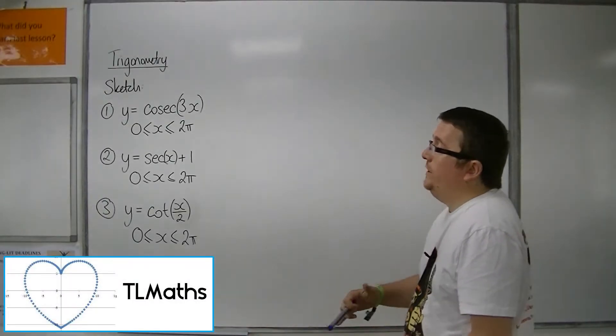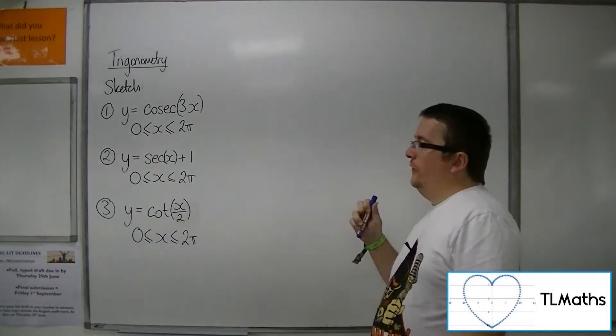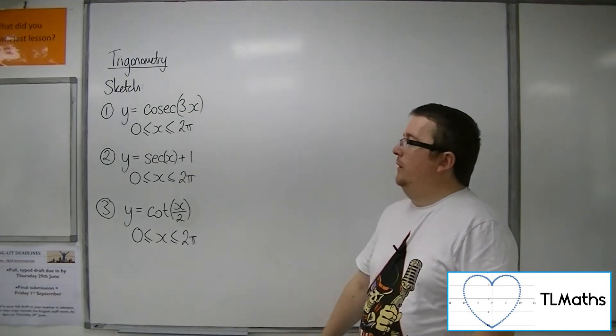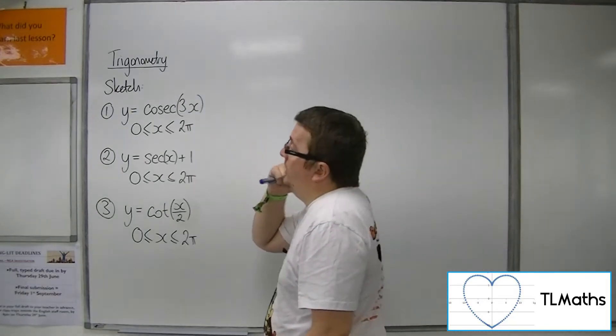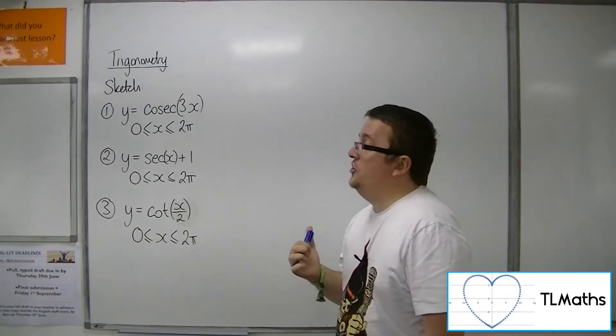Okay, so in this video, what we need to do is sketch each of these transformed reciprocal trig graphs. In the first one here, we've got y equals cosec of 3x,